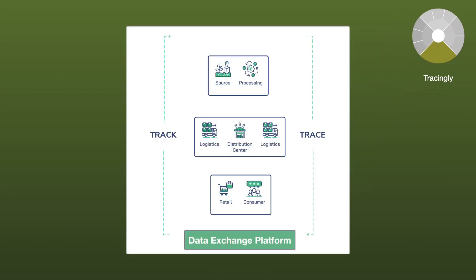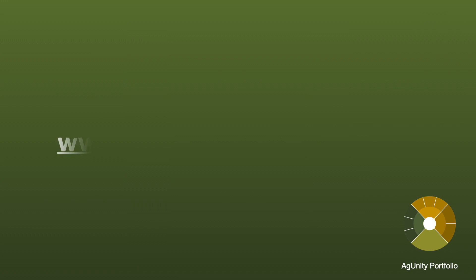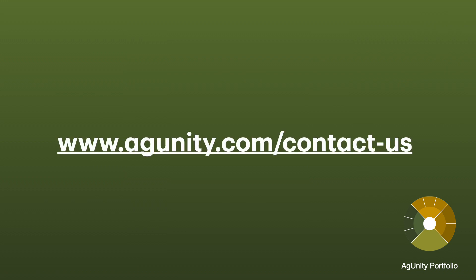Agunity's partner traceability solution, Tracingly, can track products across the supply chain from their origin to the destination port. There are a number of ways to tag a product to enable product monitoring at different stages, securely providing data and reports to all interested parties. Book your discovery call today to learn about our freemium products and how to unlock the full potential of your cooperative.